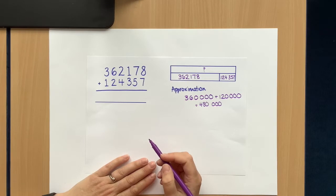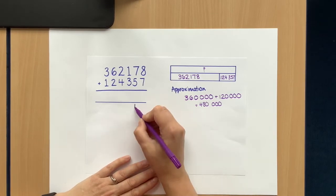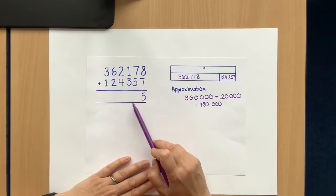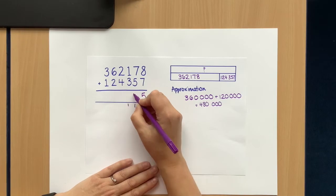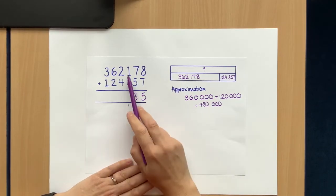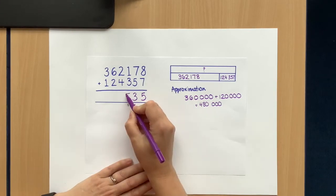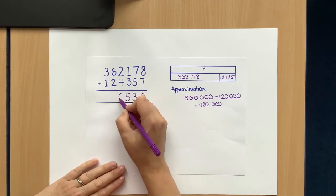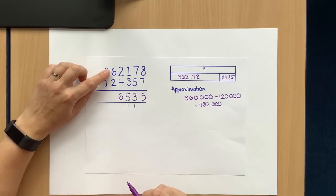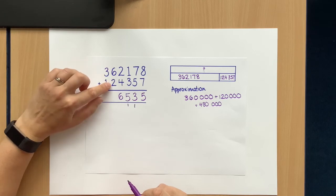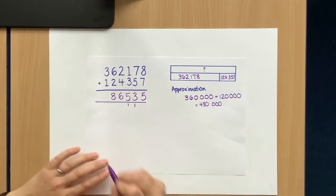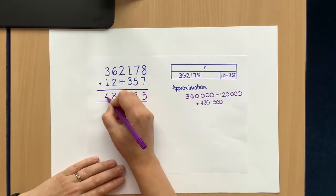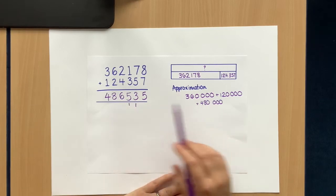Eight ones and seven ones is 15 ones, which is one ten and five ones. Tens now, seven tens and five tens and one ten is 13 tens, which is 100 and three tens. Hundreds, I've got 100 add 300 add 100, which is 500. Thousands, I've got 2 thousands add 4 thousands, which is 6 thousands. Tens of thousands, I've got 60,000 and 20,000, which is 80,000 or 8 ten thousands. And then 100,000, I've got 300,000 add 100,000, it equals 400,000. Looking at my approximation, that looks about right.